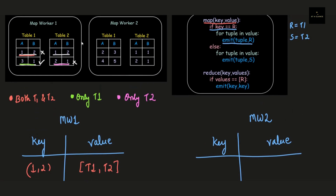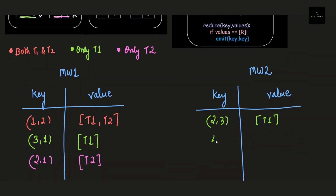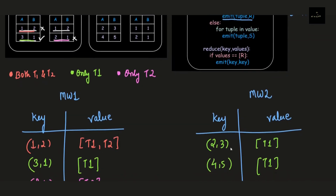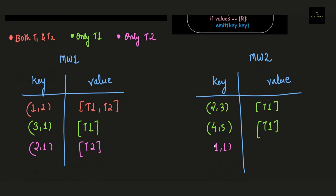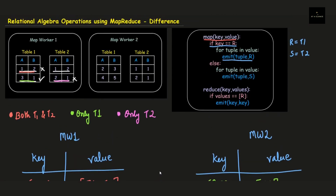Similarly for map worker 2: the record 2,3 is only in table 1, so green color with value t1. The record 4,5 is also only in table 1, green color. The record 1,1 from table 2 gets pink color since it is only in table 2. The record 2,1 from table 2 also gets pink color. We have successfully converted all records into key-value pairs.